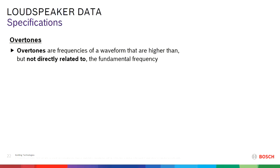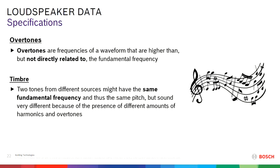Overtones are frequencies of waveforms that are higher than but not directly related to the fundamental. For example, when the fundamental is 100 Hz, an overtone might be 125 Hz — not a direct multiple, but it does exist. When you add all those tones, two sounds from different sources may have the same fundamental frequency — the same pitch — but sound different because of different amounts of harmonics and overtones. That's what they call the timbre, and that's what makes the sound of a voice or instrument sound different.